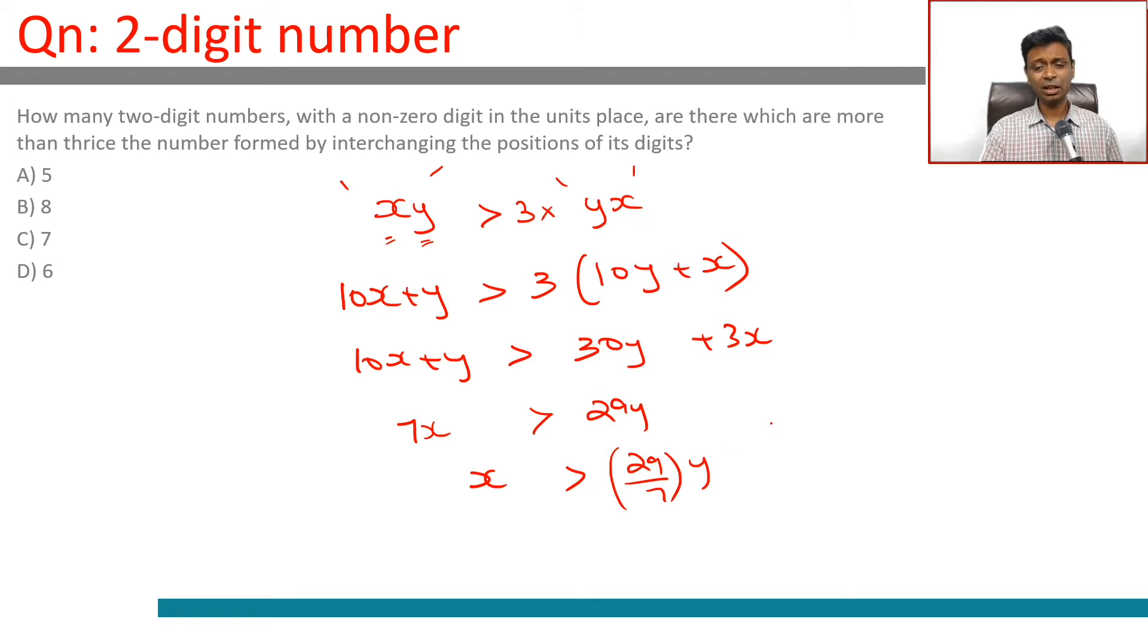29 by 7 is a little more than 4, so x is greater than 4y. We're looking at two digits where x is greater than 4y, a little more than 4y, so we'll have to be careful with the numbers.